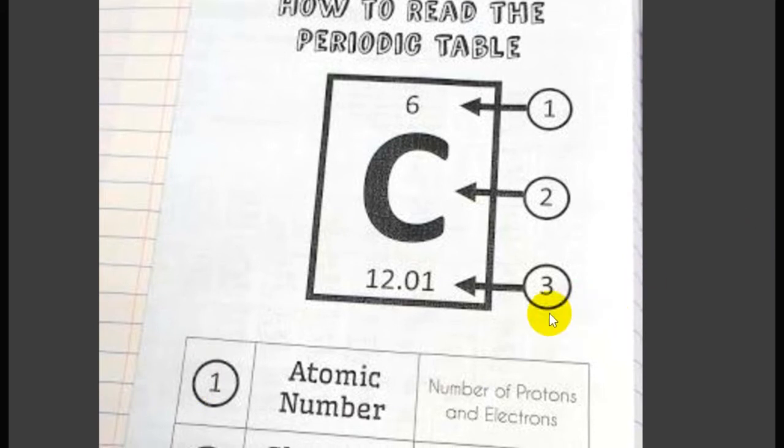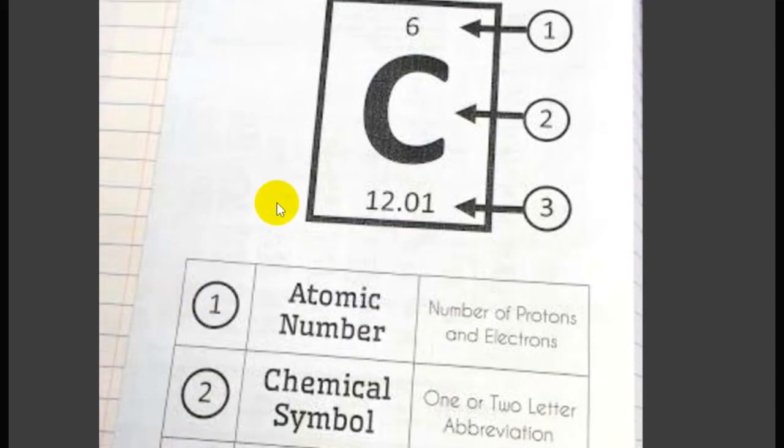Another thing inside the block is the element mass. Just so you don't get confused with the atomic number, the mass is usually located at the bottom of the block. You can also identify that it is the mass because it will be written with a decimal and it will usually have multiple digits.